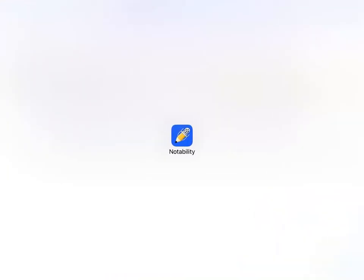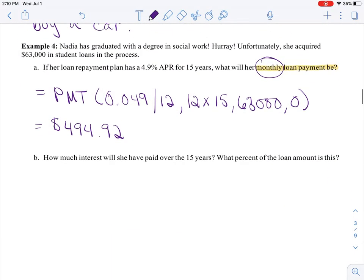I'm going to go ahead and get rid of that. How much interest will she have paid over the 15 years? So let's say interest. She pays $494.92 per month for 15 years. And if I do that in my calculator, I'm going to end up getting $89,085.60.